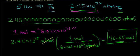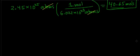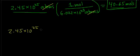Now, as one last example, let's just figure out how many dozen atoms there are in this 2.45 times 10 to the 25th atoms of iron. So, as an example, let's say we have 2.45 times 10 to the 25th atoms.